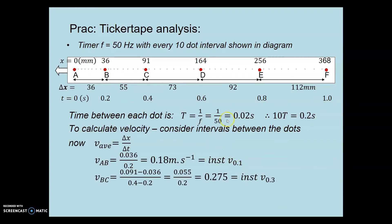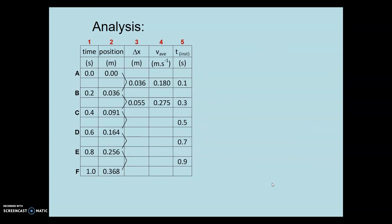Similarly, the distance between B and C. We subtract the two total distances to give that delta x value of 0.055 divided by the time interval. And when was it moving this fast? Halfway between those two values at 0.3 seconds. And so on for the rest of the tape.